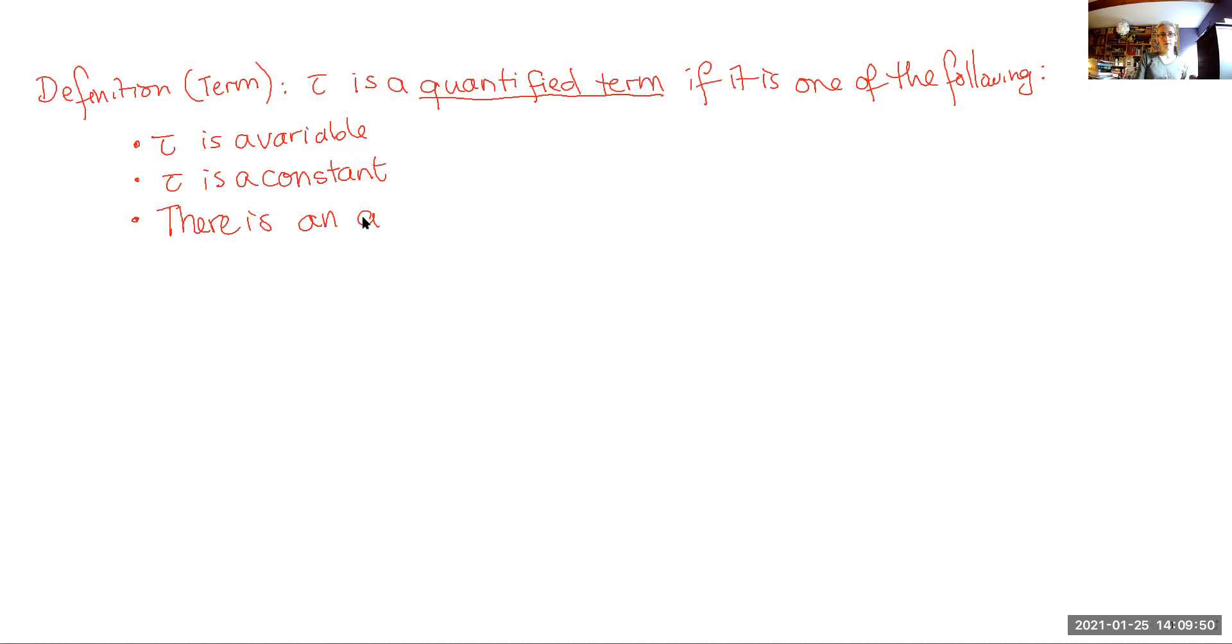And it is also a term if there is an n-ary function symbol F and terms tau 1 all the way up to tau n, such that tau itself just is the result of applying that function to those n terms.